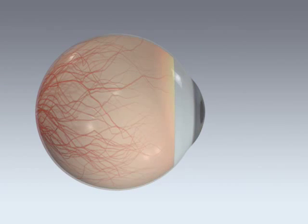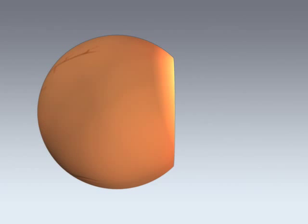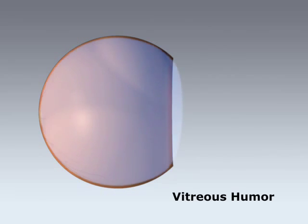The vitreous humor is the shock absorber of the eye and gives the eyeball its round shape. It is composed mainly of water and proteins and makes up two-thirds of the eye's volume.